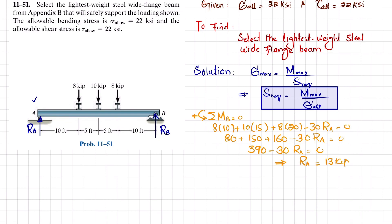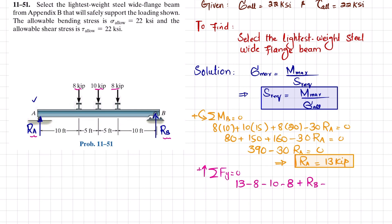Solving: Ra = 390/30 = 13 kips. Using the force equilibrium condition with upward forces positive: Ra + Rb − 8 − 10 − 8 = 0, so 13 − 26 + Rb = 0, giving Rb = 13 kips as well.